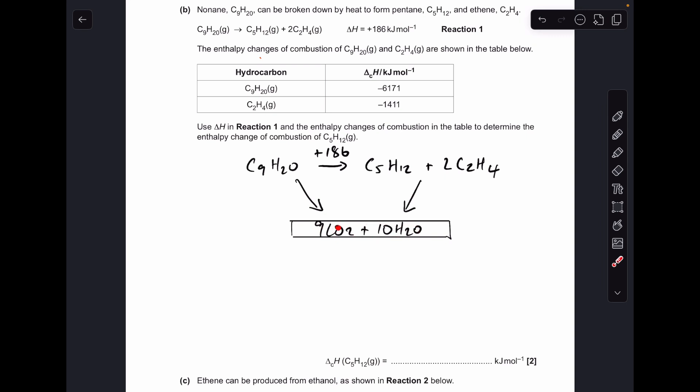So I've got the combustion products for C9H20, obviously 9CO2 and 10H2O. And if you combust a mole of pentane and two moles of ethene, you will also make 9CO2s and 10H2Os.